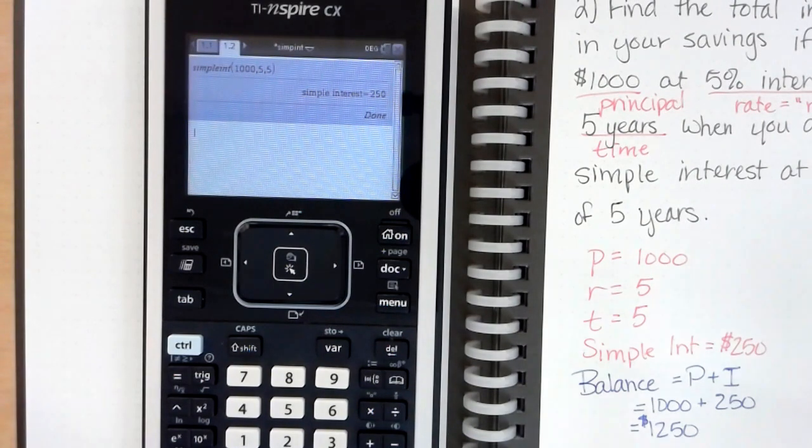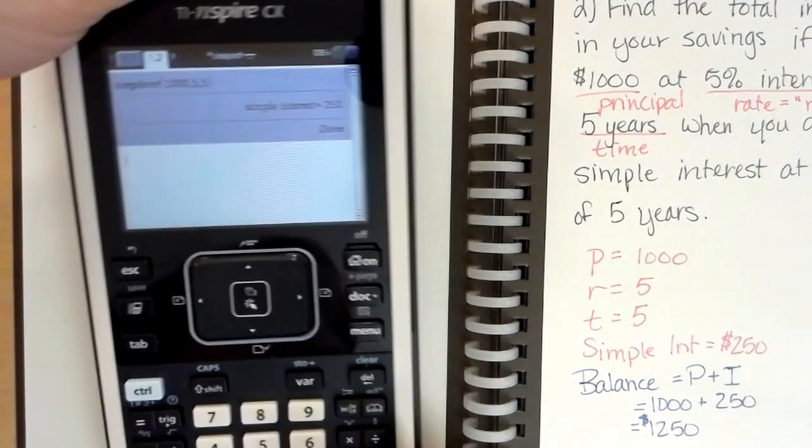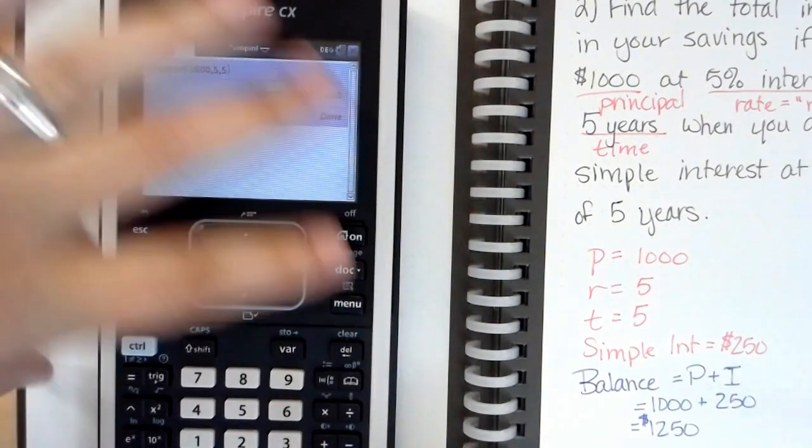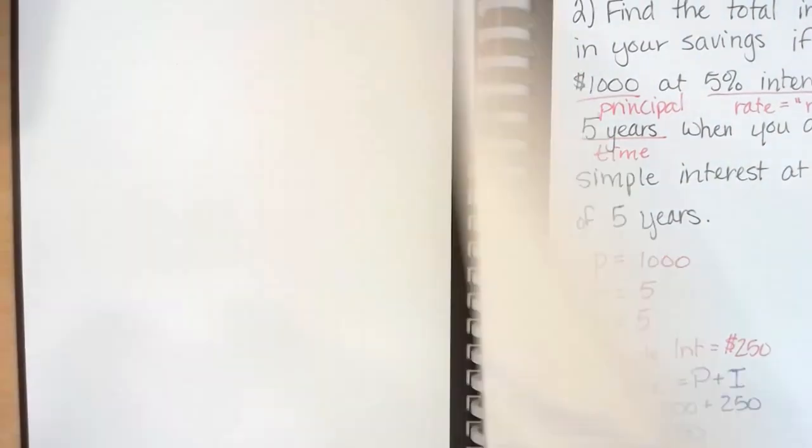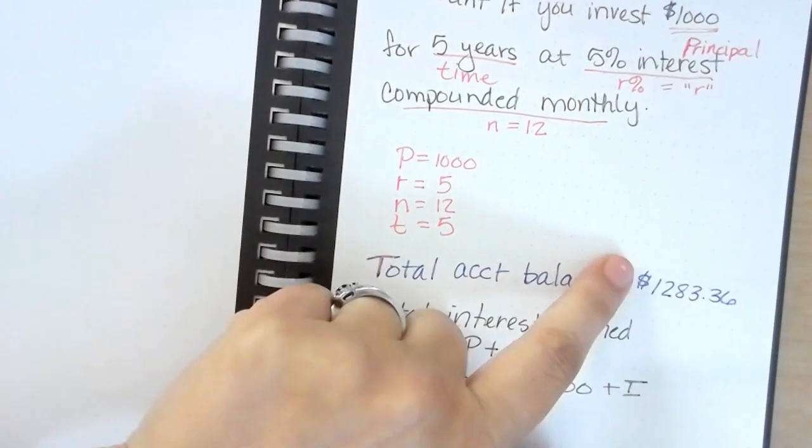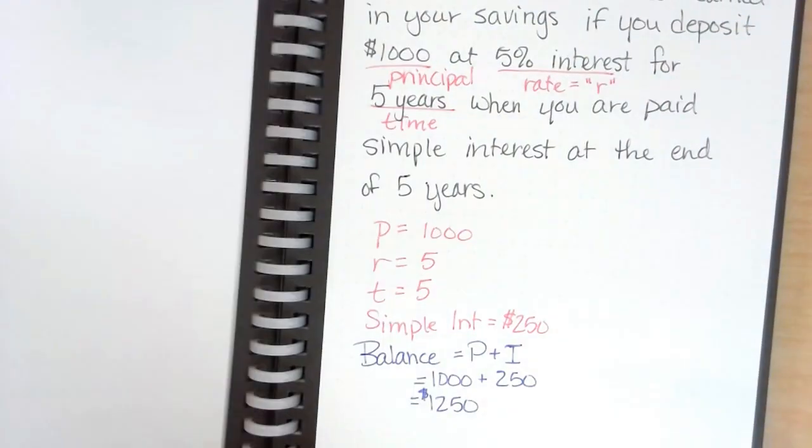The difference between compound interest and simple interest is compound interest builds on top of each other, so that when we get our grand total there we actually ended up with a lot higher total of twelve hundred and eighty three versus twelve hundred and fifty.